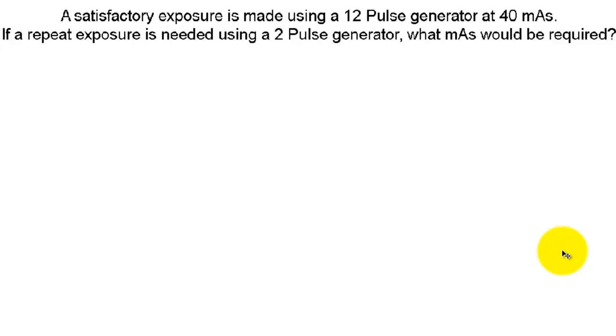A satisfactory exposure is made using a 12 pulse generator at 40 mAs. If a repeat exposure is needed using a 2 pulse generator, what mAs would be required? So obviously we need a change in mAs to maintain density.